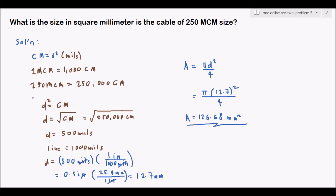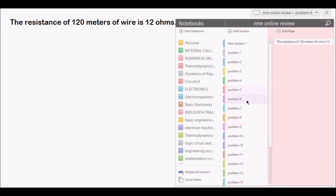So 250 MCM is equivalent to 126.68 square millimeters. When converting MCM (circular mils) to square millimeters, first convert circular mils to inches, then convert inches to millimeters, then apply the area formula for a circle since the cross-sectional area of a wire is circular.